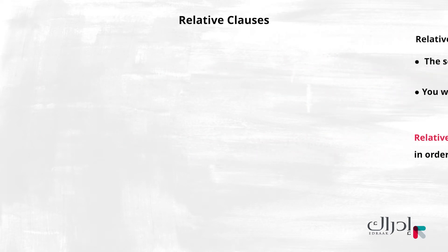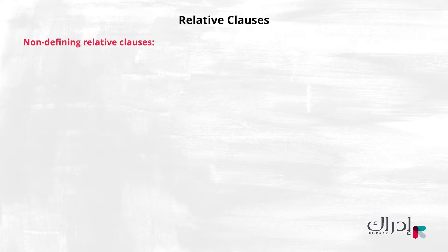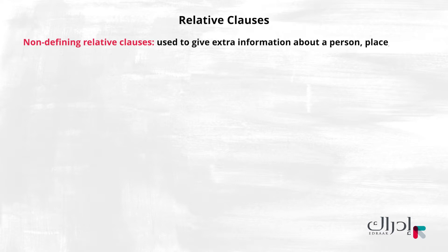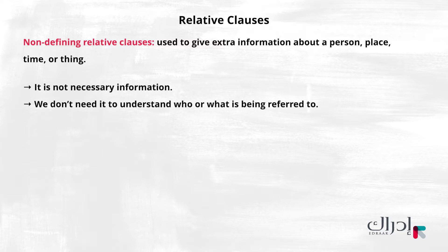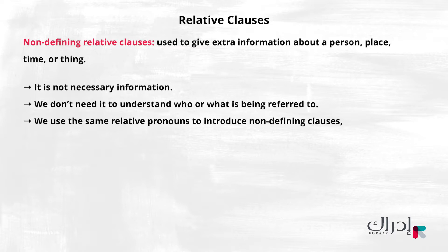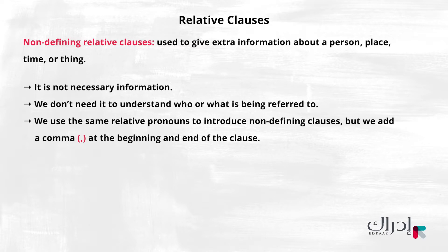Now, we will review non-defining relative clauses. We use non-defining relative clauses to give extra information about a person, place, time, or thing. It is not necessary or important information to understand who or what is being referred to. We use the same relative pronouns to introduce non-defining clauses, but we add a comma at the beginning and the end of the clause.